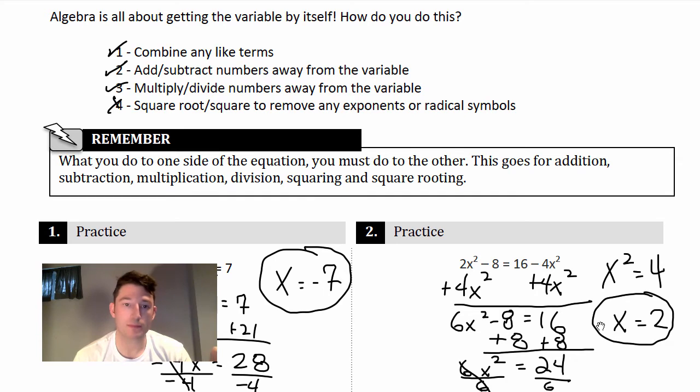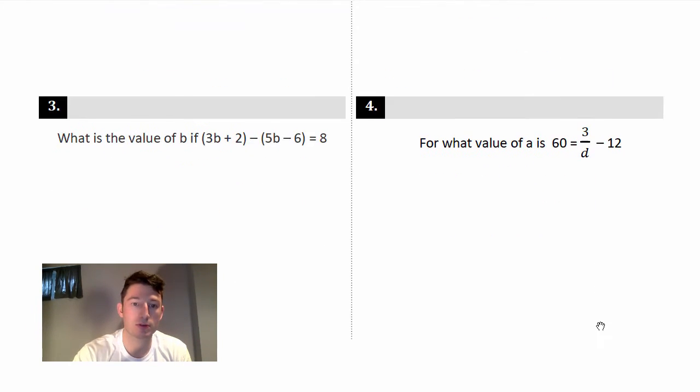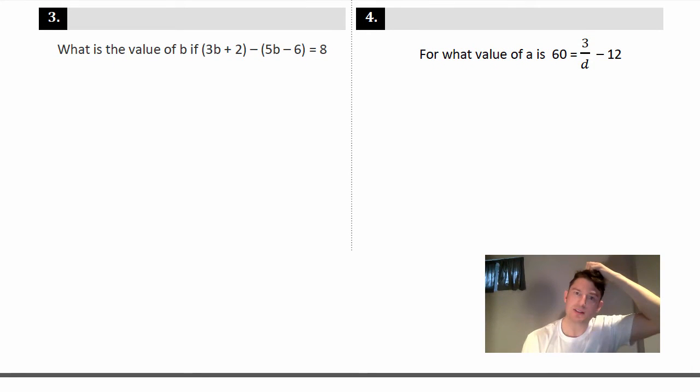All right, so those are the steps. Let's practice slightly harder ones. Number 3, so this is using an example on the SAT. They might give you examples where there's extra information. They throw you off by giving you extra stuff. So this is (3b + 2) - (5b - 6) = 8, and they want you to find b.